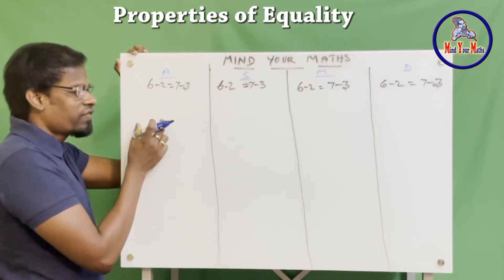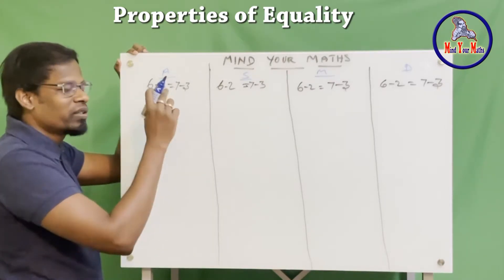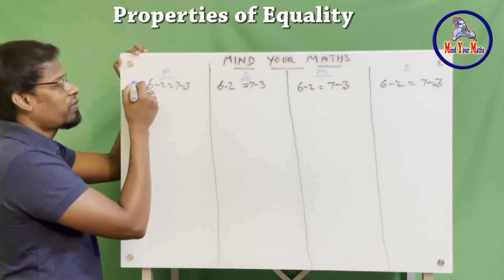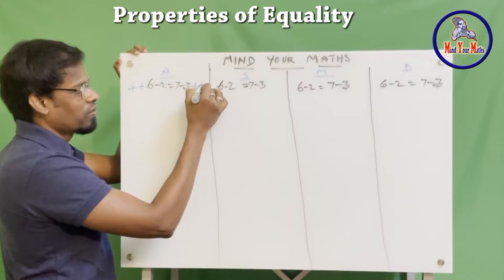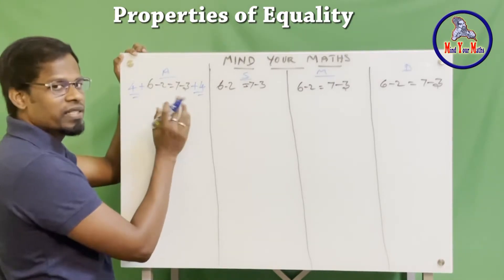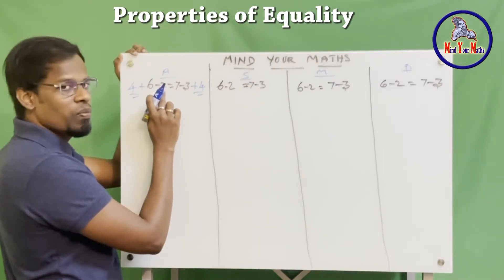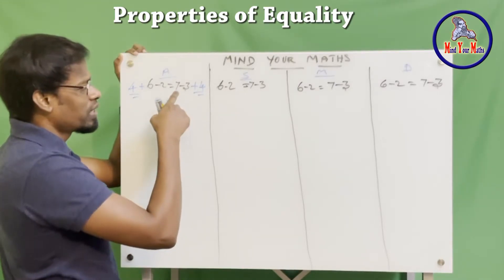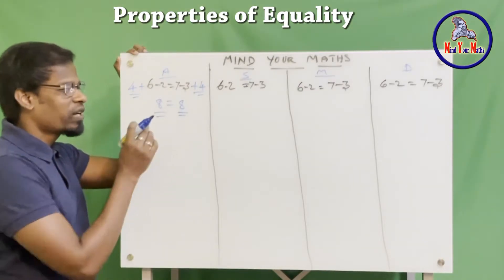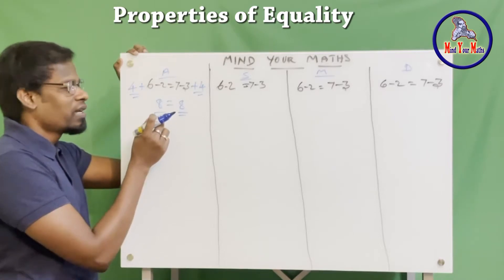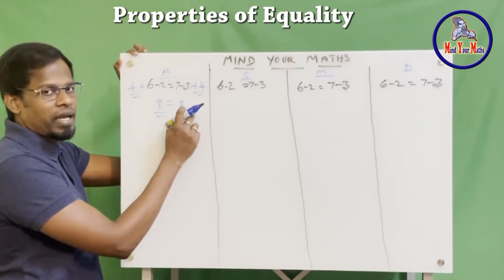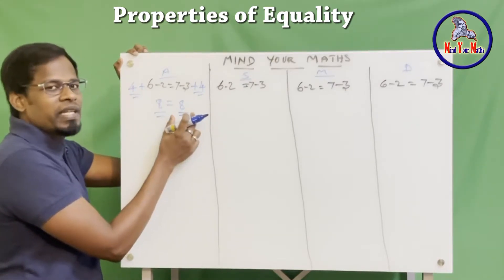When I say equality, it means the left-hand side will always be equal to the right-hand side. The numbers might change, but the left-hand side should always equal the right-hand side. Let's add 4 on both sides — plus 4, the same number on both sides of the equation. So: 4 plus 6 is 10, 10 minus 2 is 8, equals 7 minus 3 is 4, 4 plus 4 is 8. Both sides give the same value, so the equality is maintained. Before adding 4 it was 4 equals 4; now after adding 4 it becomes 8 equals 8.